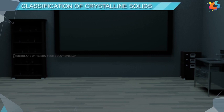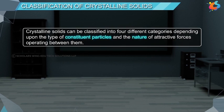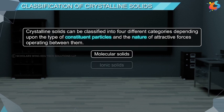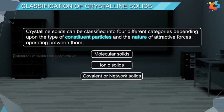Now let us classify crystalline solids. Crystalline solids can be classified into four different categories depending upon the type of constituent particles and the nature of attractive forces operating between them. They are: molecular solids, ionic solids, covalent or network solids, and metallic solids.